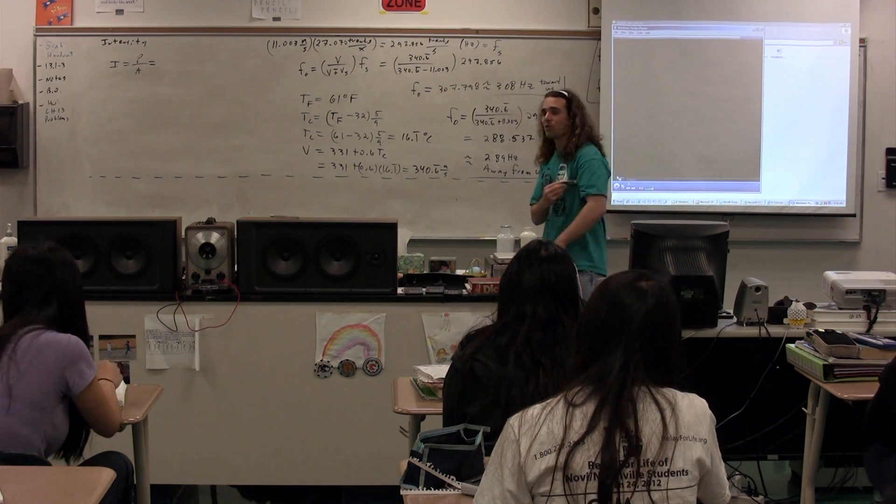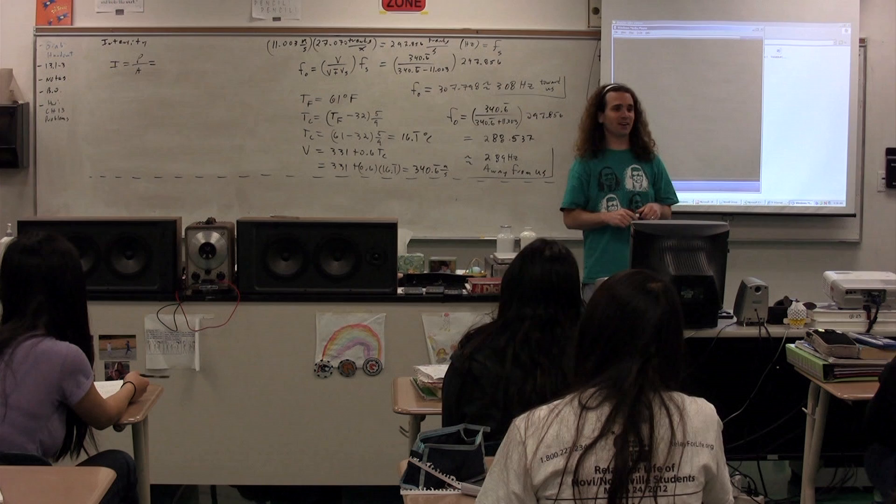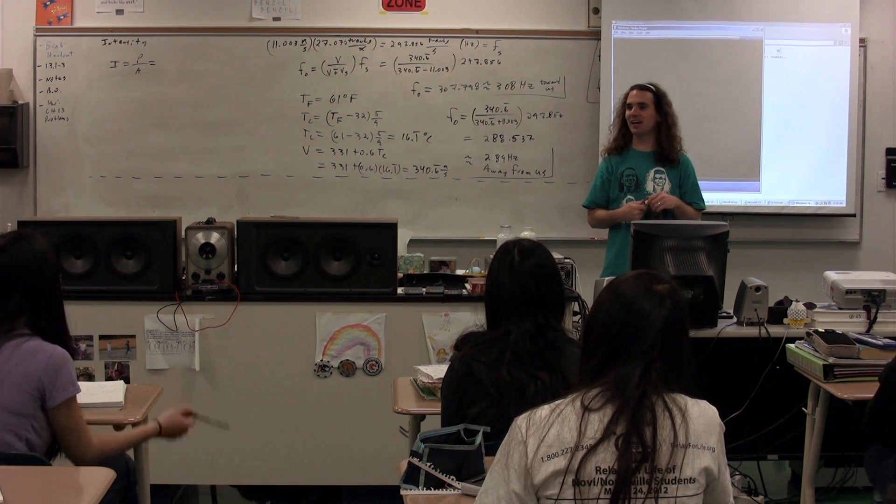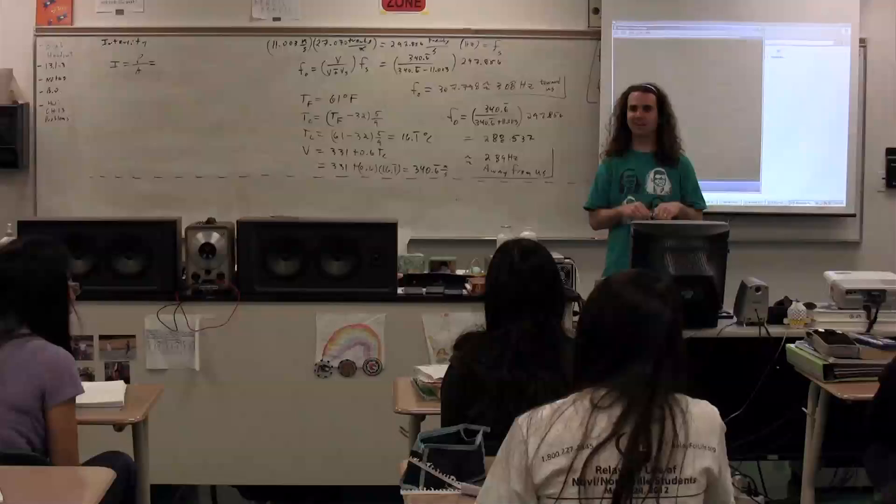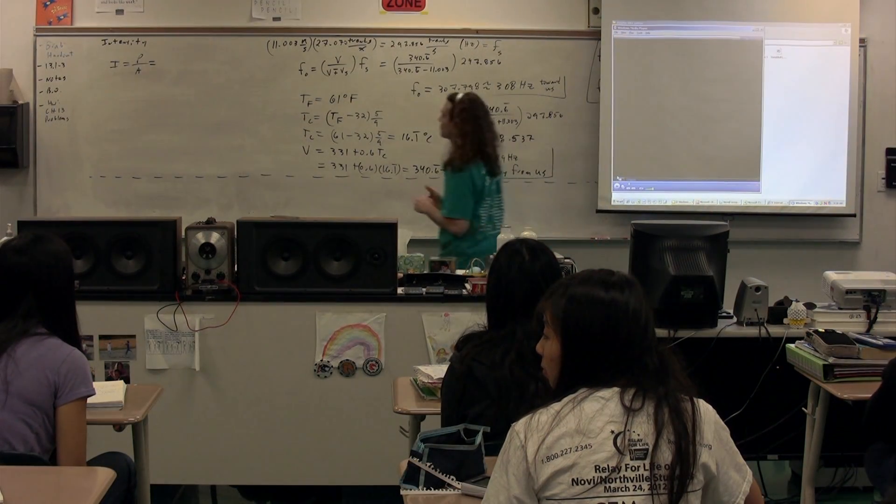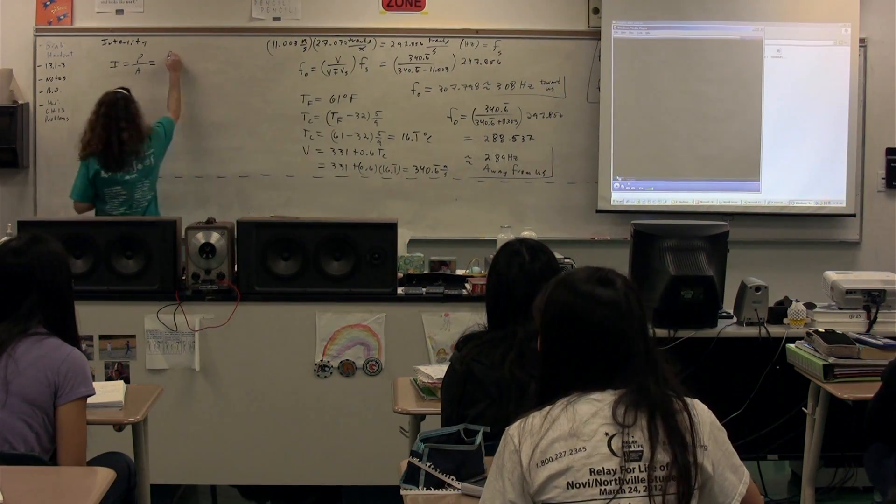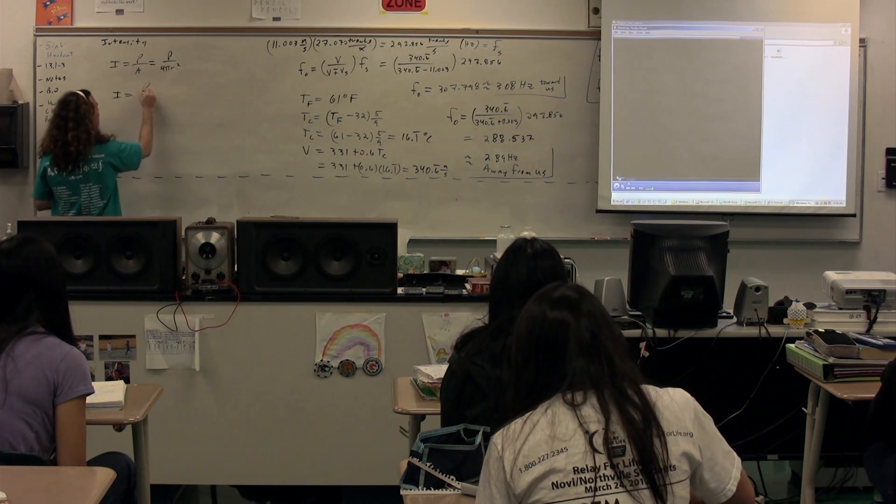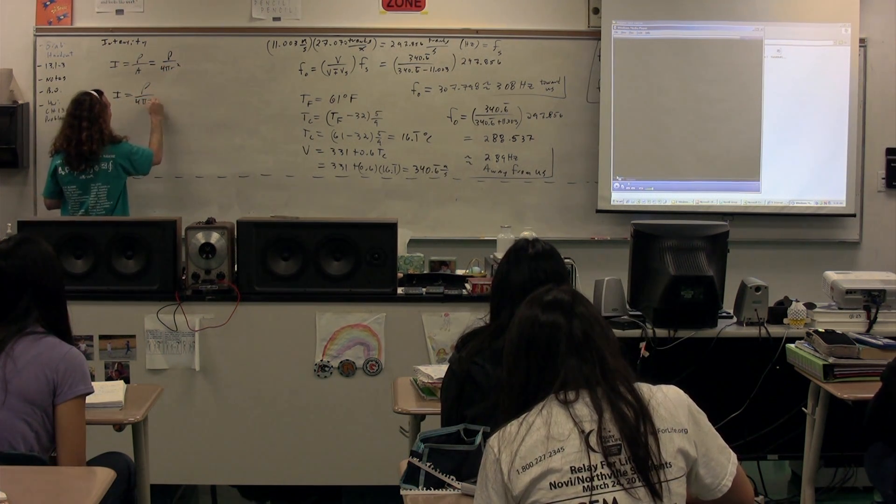So, the area is going to be the area of a sphere. Four times pi r squared. Nice. So, the area of our sphere is going to be four pi r squared. So, the intensity is power over four pi r squared.